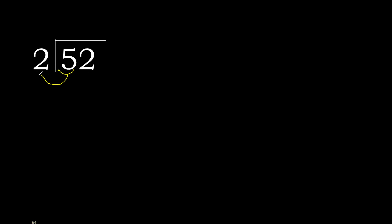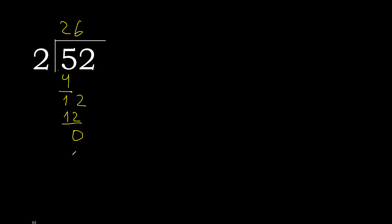52 divided by 2. 5 — 2 multiplied by which number is nearest to 5 but not greater? 2 multiplied by 3 is 6, which is greater. 2 multiplied by 2 is 4. 5 minus 4 is 1. Next, bring down 2: 12. 2 multiplied by 6 is 12. 12 minus 12 is 0. Therefore, 52 divided by 2 is 26.